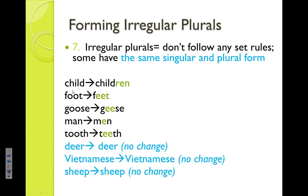Other irregular plurals are ones that are the same no matter whether they're singular or plural. So there could be one, there could be 20, but the word's going to stay the same. A lot of these are related to animals. Deer stays deer, sheep becomes sheep — it doesn't change.